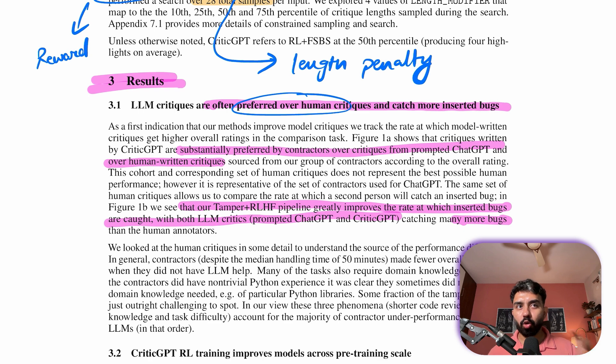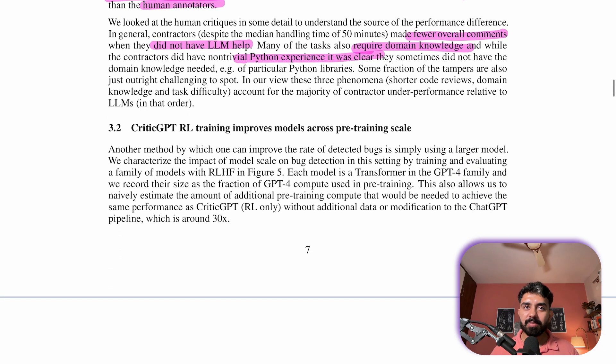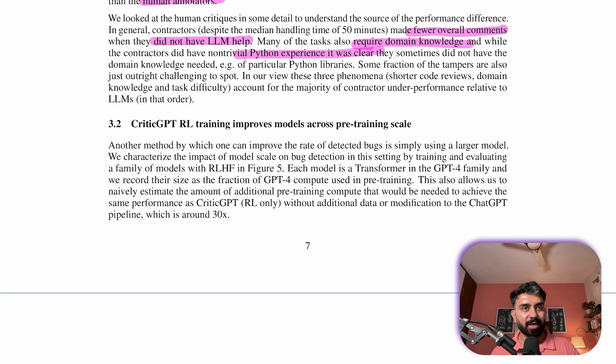The tamper plus the RLHF pipeline that they have produced, this has improved the bug detection rate with LLM critics catching more bugs than human annotators. And when contractors didn't have LLM assistance, they made fewer comments, possibly due to the need for specific domain knowledge and difficulty of some tasks. These factors explain why LLMs outperform human contractors. And additionally, CriticGPT's reinforcement learning training enhances model performance across different scales.